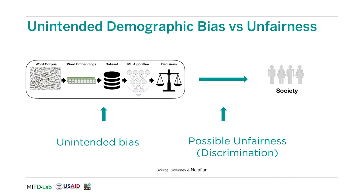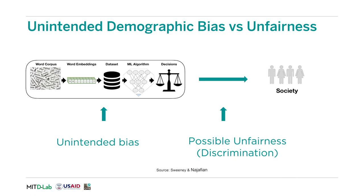We want to drive home the distinction between unintended demographic bias and unfairness. Unintended demographic bias can enter a typical machine learning pipeline from a wide variety of sources — from the word corpus to the word embedding, the dataset to the algorithm, and finally from the thresholds used to make decisions. The possible unfairness or discrimination comes at the point where this machine learning model meets society and actually causes harm. This work addresses identifying and mitigating unintended demographic bias at each stage in the NLP pipeline, from the word corpus to the decision level.